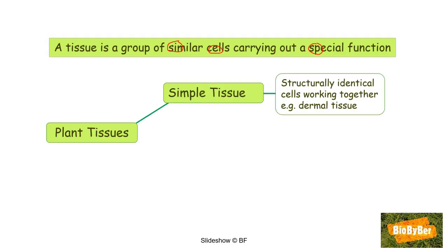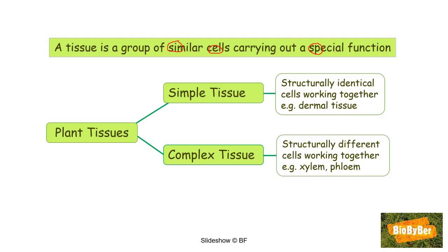There are simple tissues, which are made up of structurally identical cells working together. An example of a simple tissue is dermal tissue, because it is only made of one type of cell. The second type is complex tissue, which is made up of structurally different cells working together. For example, vascular tissue — xylem and phloem — are complex tissues. We are now going to study the different cells that make up these tissues.